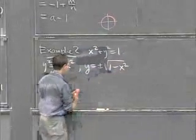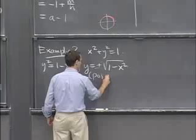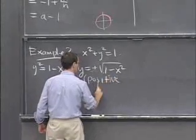All right, so that means I'm erasing this minus sign. I'm just taking the positive branch. Just for my convenience, I could do it just as well with the negative branch.